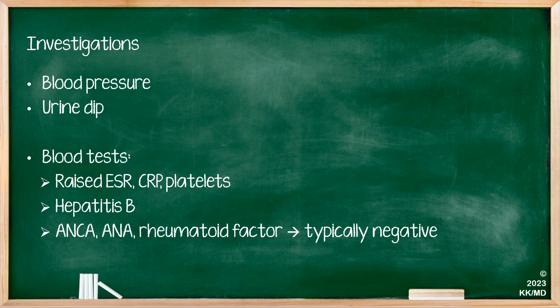As for the investigations you would want, remaining systematic in your approach — especially if you're thinking about this in the context of PACES — you would want to start with bedside investigations. That would be blood pressure and urine dip, particularly looking for any evidence of high blood pressure, which would be concerning for a potential case of vasculitis, as well as haematuria, which would be concerning for renal involvement. You would also want some basic blood tests, including inflammatory markers. You would frequently get raised ESR, CRP, and platelet count.